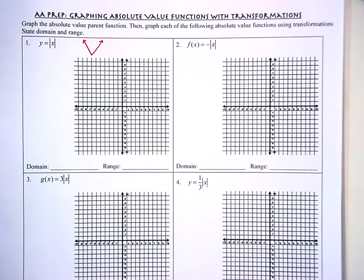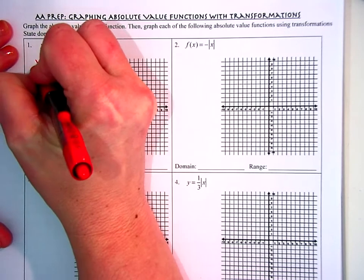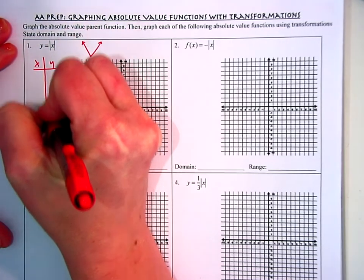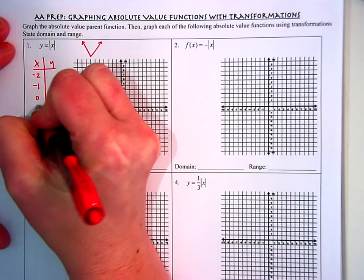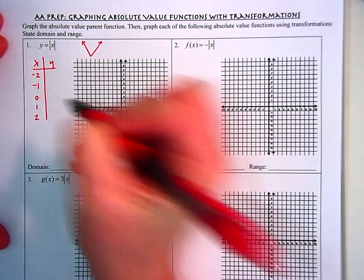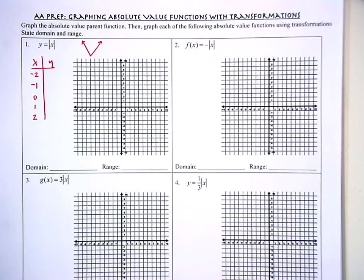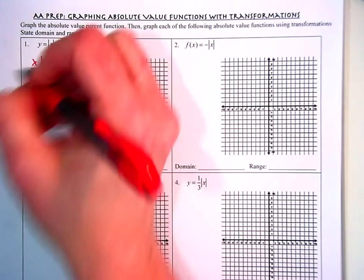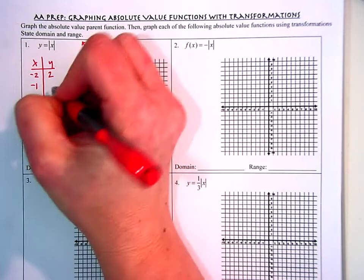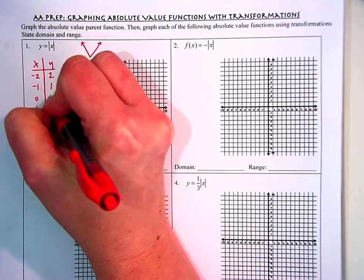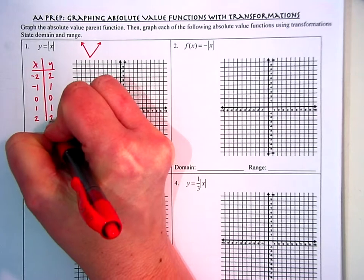When I look at it in a table, I make my table of X and Y values — inputs and outputs. I typically use negative two to positive two for the X values. When I plug those quantities into absolute value bars, it forces all of those quantities to be positive. So negative two becomes positive two, negative one becomes positive one, zero stays zero, one stays one, and two stays two.